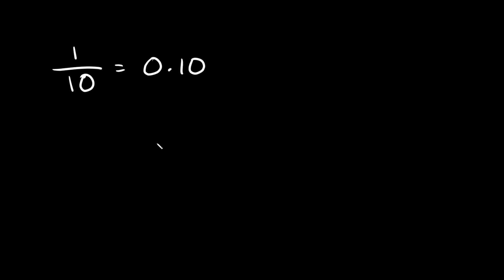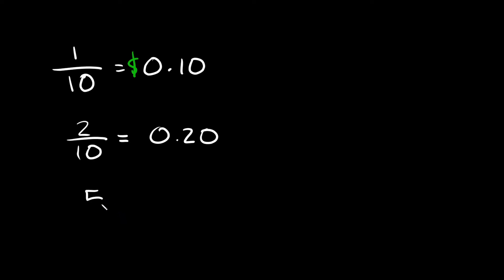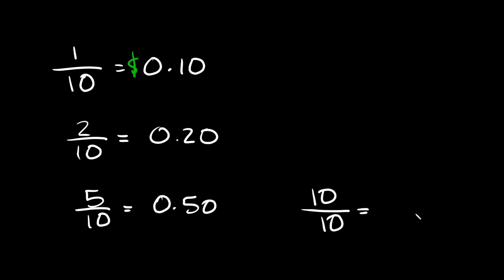If you have a denominator of ten, the trick is to think of the top number as how many dimes you have. So one over ten is the same thing as ten cents. Two over ten would be twenty cents. Five over ten would be fifty cents. And ten over ten would be the same thing as one whole dollar, or simply just one, because any number divided by itself is equal to one.